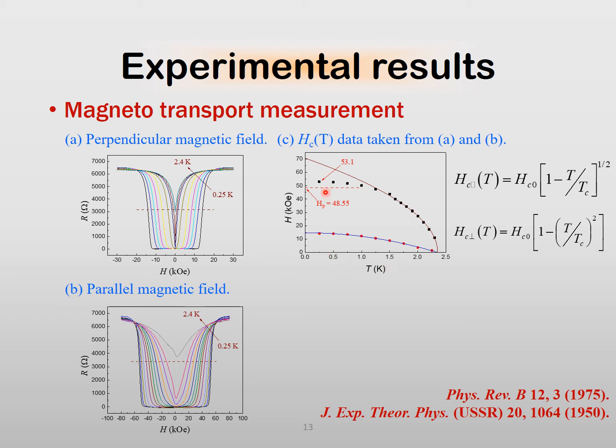When the magnetic field is parallel to the plane of the aluminum nanofilm, we can see that HC2 exceeds the Pauli paramagnetic limit. The fit is much better in the high temperature regime. We are not quite sure about the deviation at low temperatures. The take-home message is that it is possible to violate the Pauli paramagnetic limit.